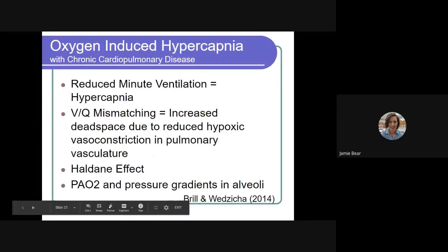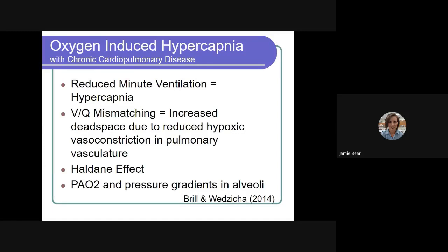Finally, I want to talk about oxygen induced hypercapnia. And that happens with chronic cardiopulmonary disease, such as COPD or perhaps CHF. So when we have a reduced minute ventilation, that causes hypercapnia or high PaCO2 levels. VQ mismatching can also increase our hypercapnia because there's increased dead space. So wasted ventilation due to reduced hypoxic vasoconstriction in the pulmonary vasculature.